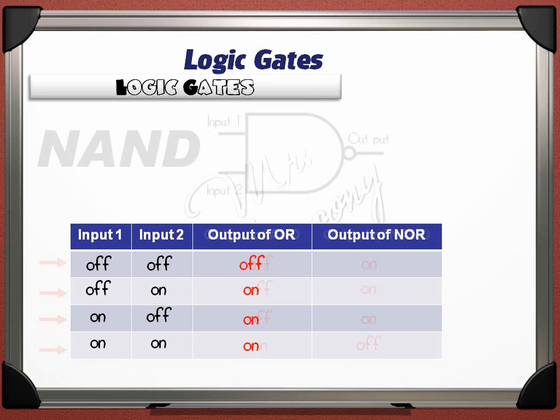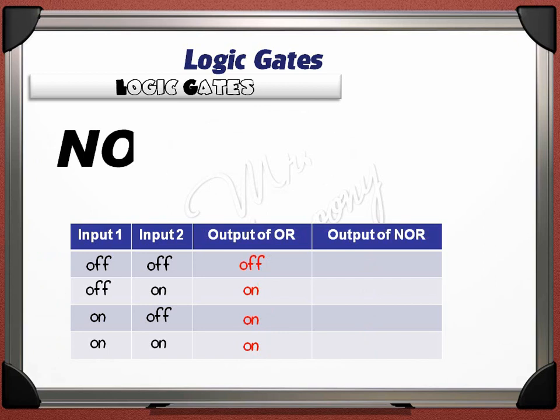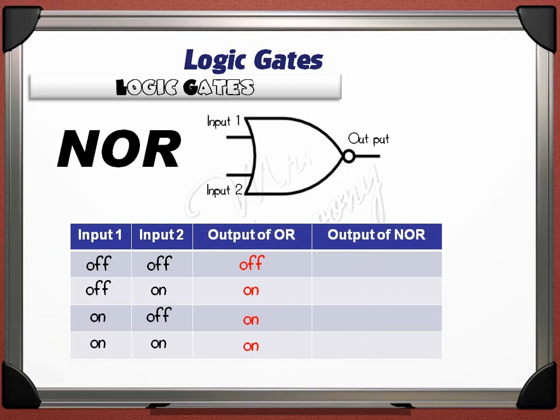The fourth logic gate is NOR, or NOT OR. It is the opposite of the OR gate. All you need to know is what the OR gate gives, and the NOR will be the opposite. Since OFF and OFF gives OFF on the OR gate, the NOR gate gives ON for that case, and all other cases are the opposite.